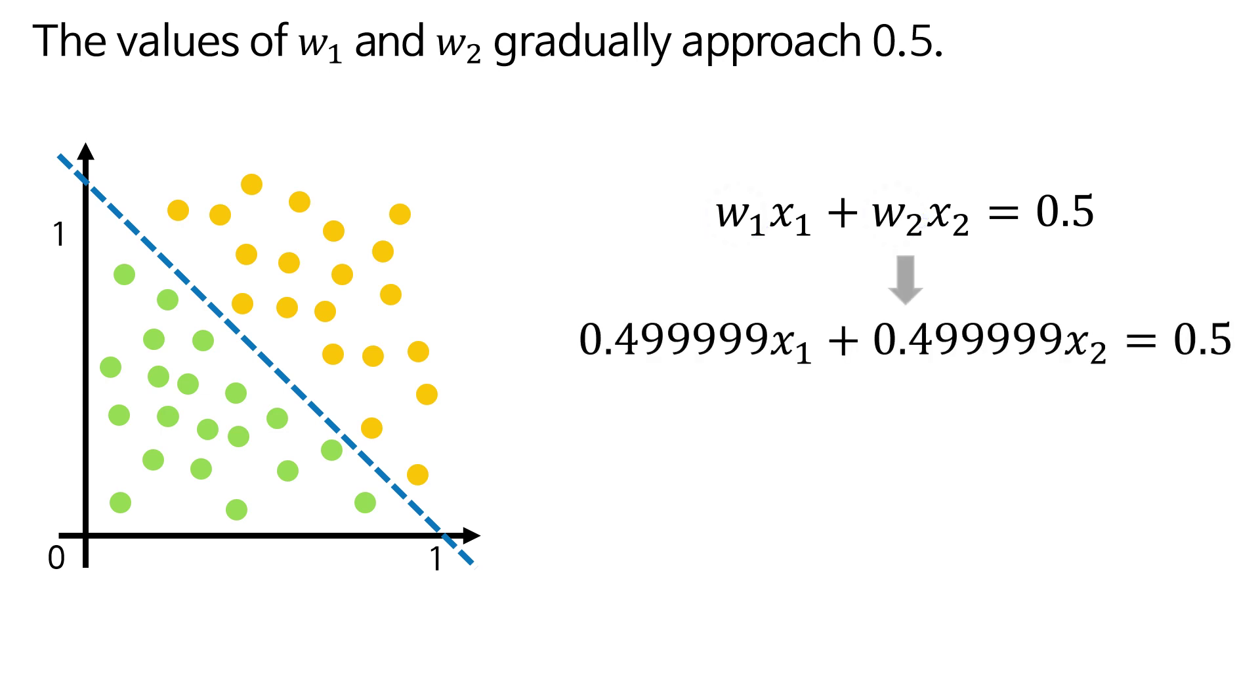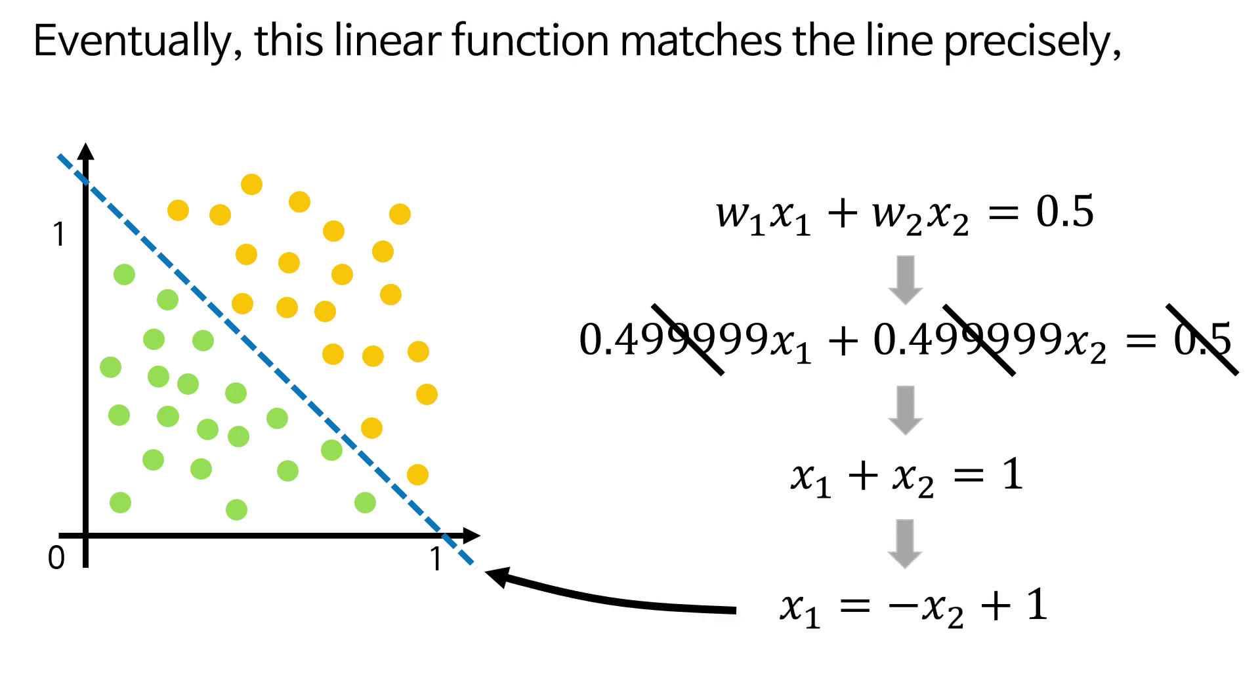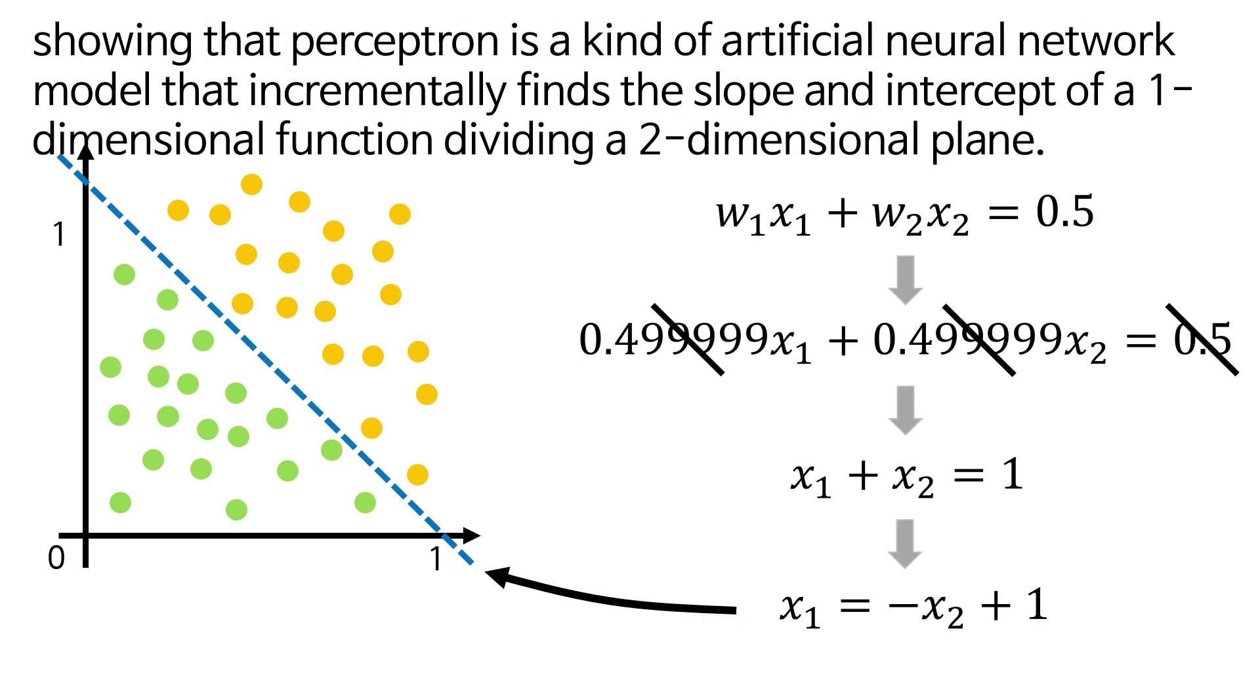Eventually, this linear function matches the line precisely, showing that Perceptron is a kind of artificial neural network model that incrementally finds the slope and intercept of a one-dimensional function dividing a two-dimensional plane.